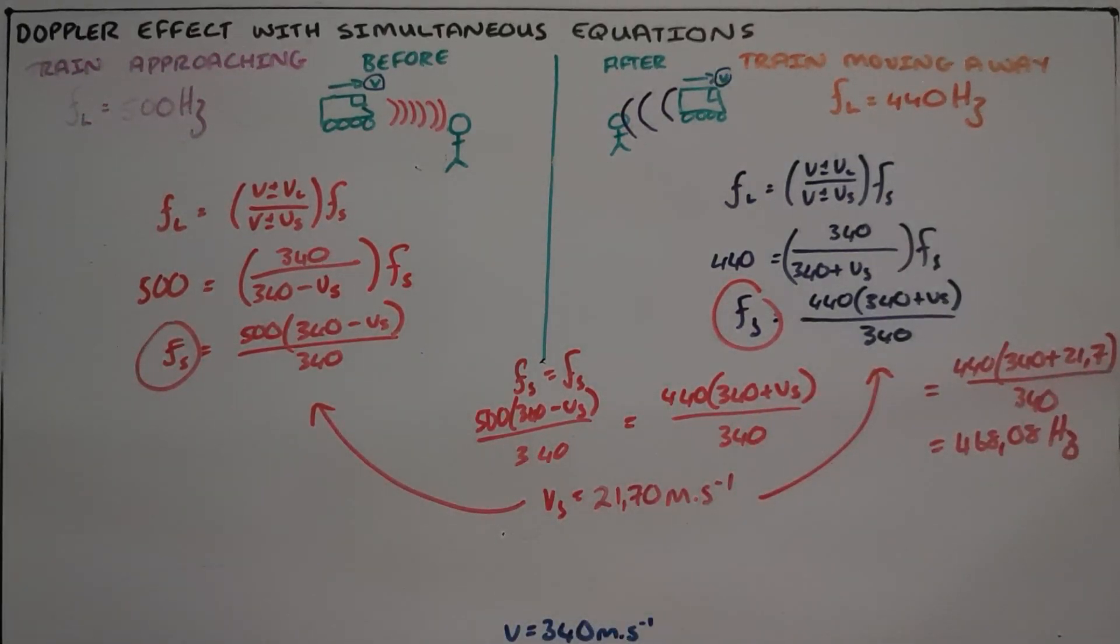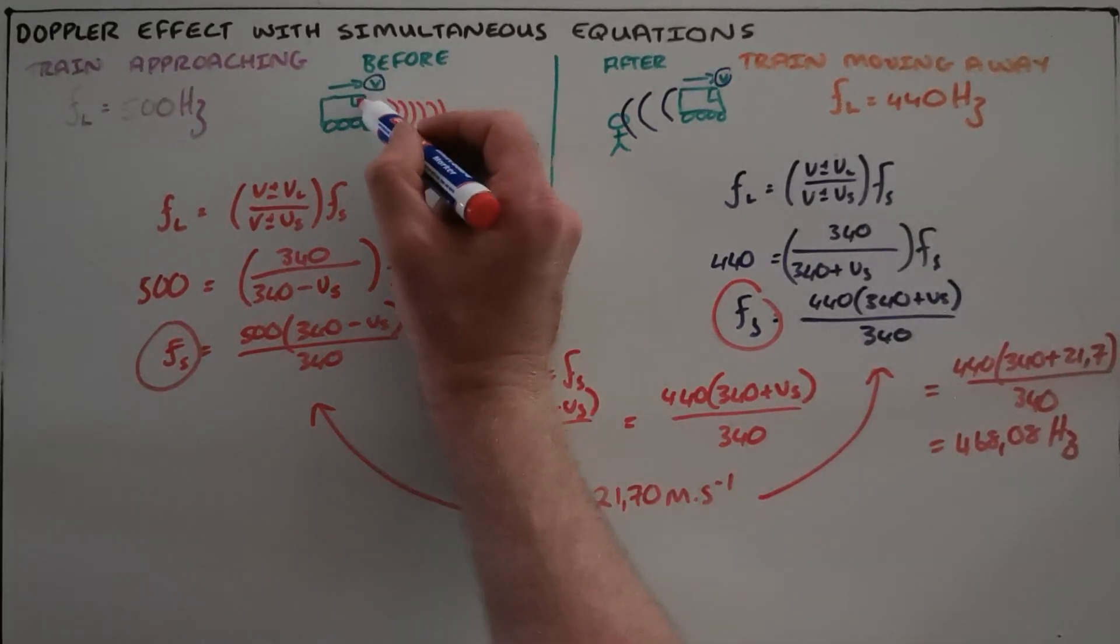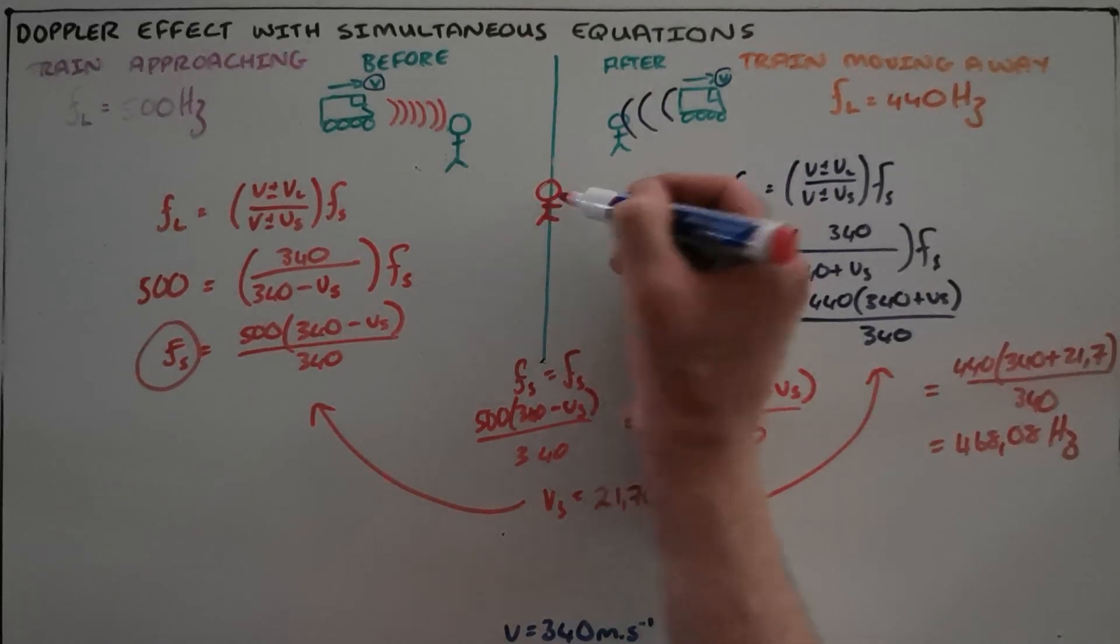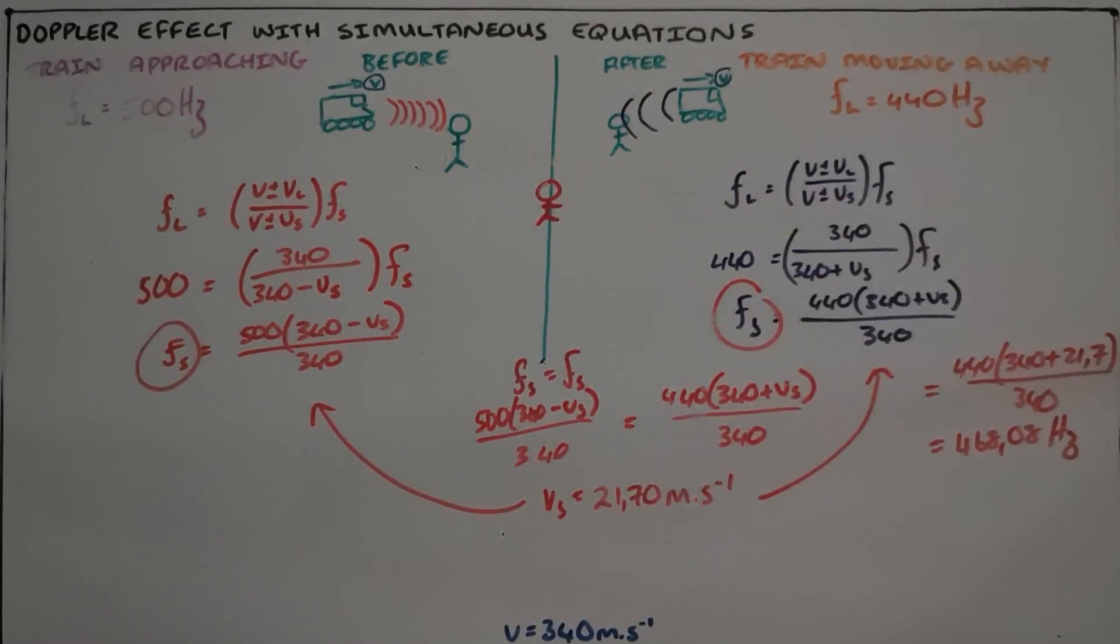Another common question would be something along the lines of: what frequency is heard by the train driver, or heard by the observer as the train passes? In both of those scenarios, the answer is the same—the frequency that is heard is exactly the frequency that is emitted, because at that point there is no relative motion between the source and the observer.